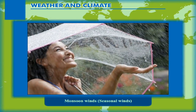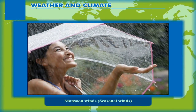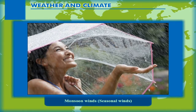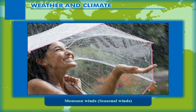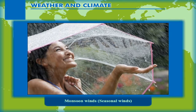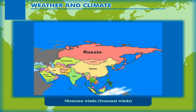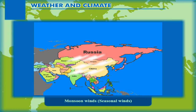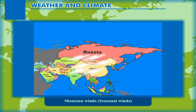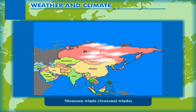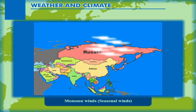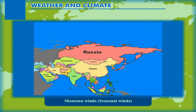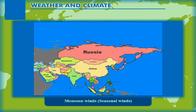Monsoon winds are seasonal winds. The word monsoon is derived from the Arabic word 'mosem' meaning season. They blow from sea towards landmass in one season and then from land towards sea in the other season of the year. The complete reversal of these winds is their characteristic feature.